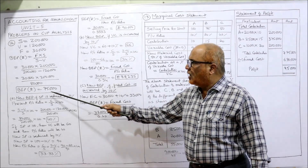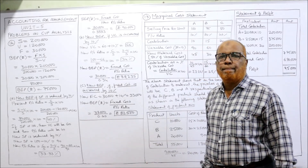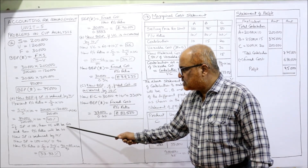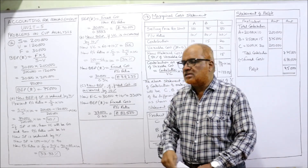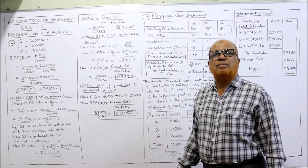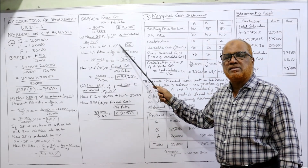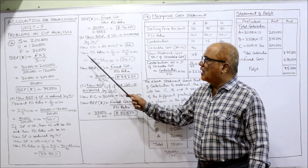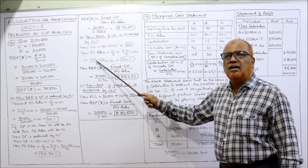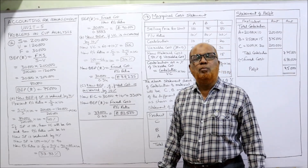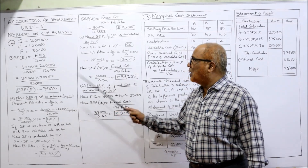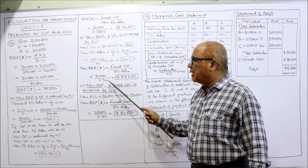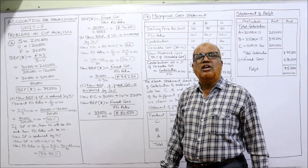New BEP if variable cost is increased by 10%: Present variable cost is 60 rupees per 100 rupees of sales. A 10% increase gives a new variable cost of 60 + 6 = 66. New PV ratio = (100 − 66) ÷ 100 × 100 = 34%. New BEP = 30,000 ÷ 0.34 = 88,235. The old PV ratio was 40%, now it has become 34%.